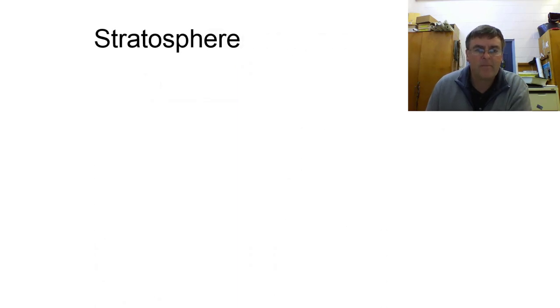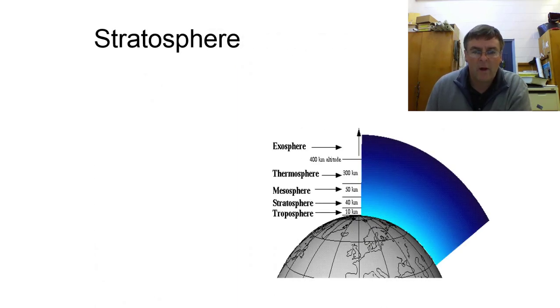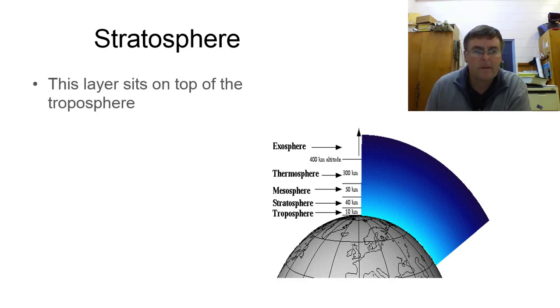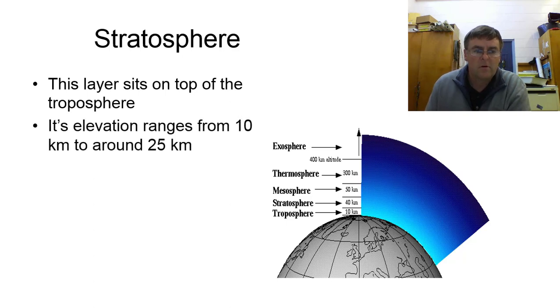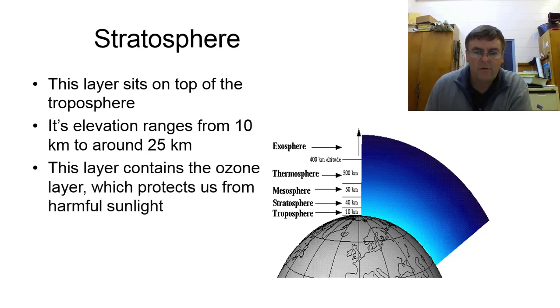Next layer up, stratosphere. That's where the planes will fly and they get above the weather here. So next layer above the troposphere. It's about 40k thick. So up it goes. So, 10 to 25k thick. And that's the key part of the stratosphere. Ozone layer protects us from harmful sunlight. So here in New Zealand it's pretty clean air and we still have trouble with the thinness in the ozone layer. So you've got to watch the old sunburn.